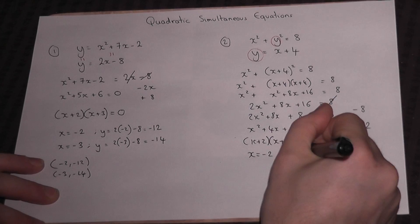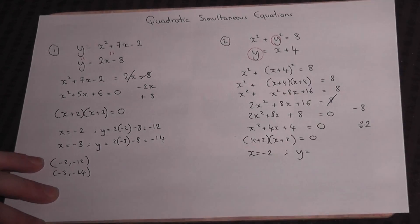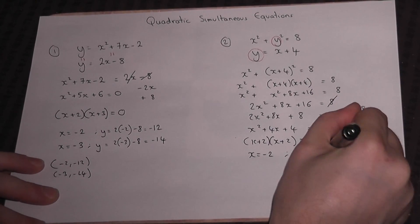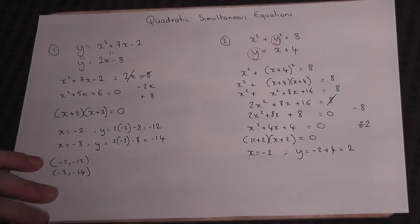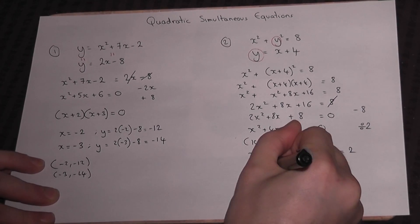Almost done. Y is equal to x + 4, which is minus 2 plus 4, which equals 2. And the coordinate we're left with is (-2, 2).